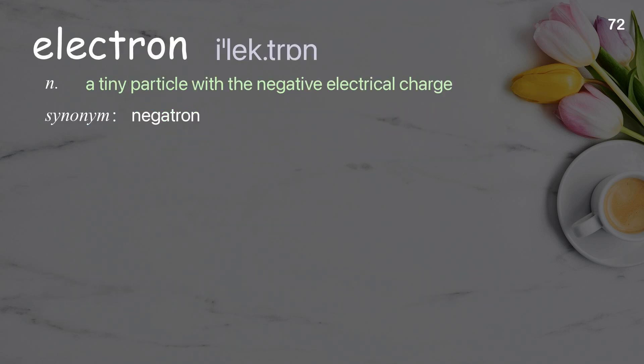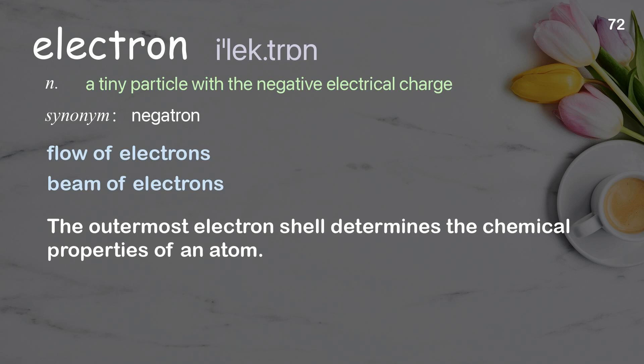Electron: a tiny particle with a negative electrical charge. Examples: flow of electrons, beam of electrons. The outermost electron shell determines the chemical properties of an atom.